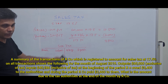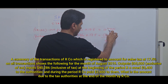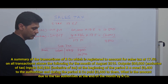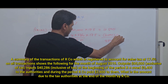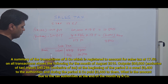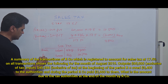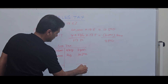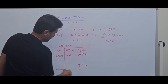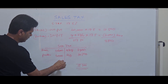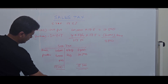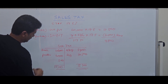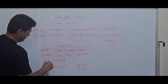So summarizing the sales tax account: opening balance $3,400 payable, credit output tax $10,500, debit input tax $6,000, debit payment $2,600. What is the closing balance? After working through the figures, the closing balance carried forward is $5,300 payable.